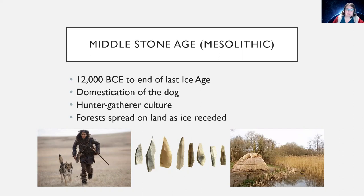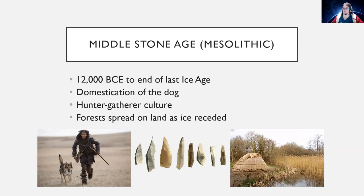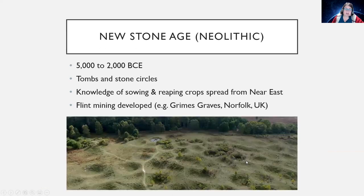You can tell the difference between the stone tools of the Mesolithic and the Old Stone Age because the Mesolithic tended to use little microlith flints, which would typically be attached to a wooden shaft or haft and used as scrapers or pointers. You also start to get sedentary dwellings at this point as well.